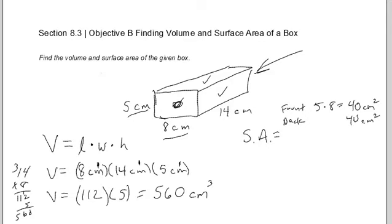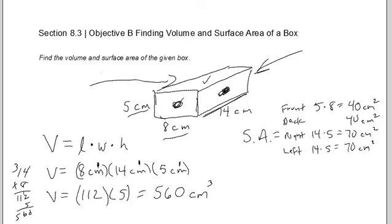So now we go to the right side, the right side right here. This side is 14 by 5. So the right is 14 by 5, and 14 times 5 is going to be 70 centimeters squared. Now, just as there's a right side, there is a left side over here that we cannot see. So I'm going to say left. The left is 14 times 5 as well, so another 70 centimeters squared.